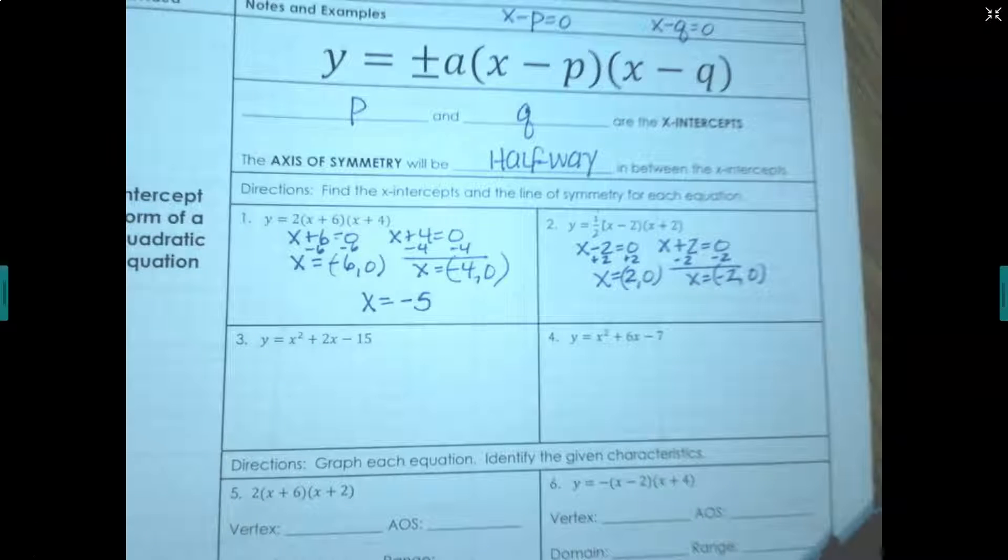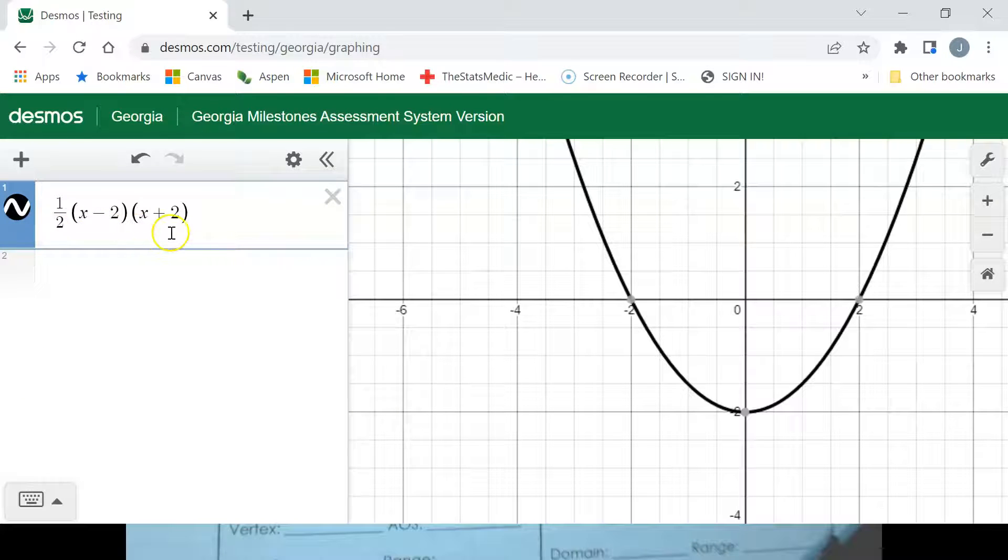Alright, so once we've put our equation into Desmos, you can see there's our x-intercepts at negative 2, positive 2.